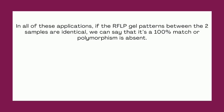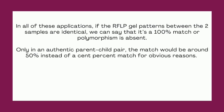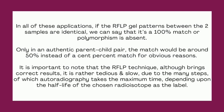In all of these applications, if the RFLP gel patterns between two samples are identical, we can say there is a 100% match or polymorphism is absent. Only in an authentic parent-child pair would the match be around 50% instead of 100%, for obvious reasons. It is important to note that the RFLP technique, though it brings correct results, is rather tedious and slow due to its many steps, of which autoradiography takes the maximum time depending on the half-life of the chosen radioisotope as the label.